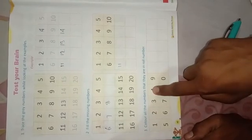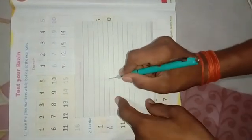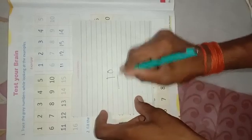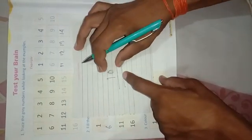1, 2. 1, 2, 3, 4, 5, 6, 7, 8, 9. 1 and 0. 1, 1 and 0, it is 10.